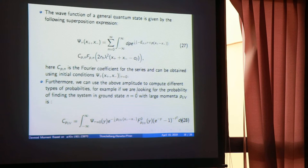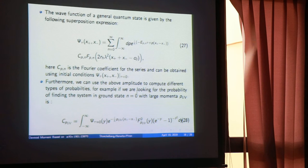An interesting case is that you can estimate the ground state wave function. The ground state wave function requires specifying the large momentum — you need a cutoff for your momentum. Importantly, when you use this Stückelberg-Horwitz-Piron quantum mechanics on curved spacetime, the ground state depends on the cutoff of the momentum.